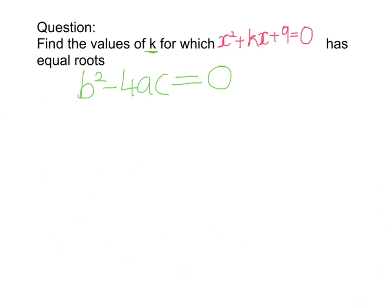I've got to find the values of k which make that statement true. So in this case, my a is 1, my b is k, and my c is 9. Okay, so I'm going to use this information here to help solve the values of k that make that statement true.